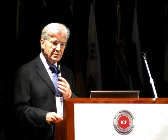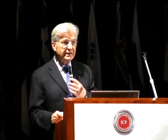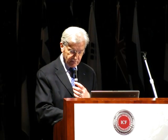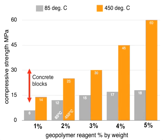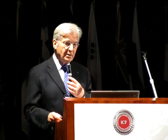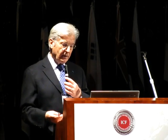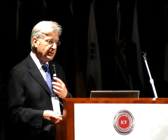You have a technology that is very easy to implement and can supply many different types of building materials. Comparing strength between blocks made at 85°C and those made at 450°C, the strength obtained depends on the amount of ingredients — which is obvious since we are dealing with a chemical reaction. The more reactive component, the kaolinite, you put in, the more it will interact in the system.